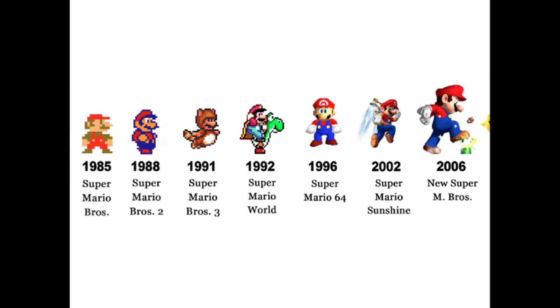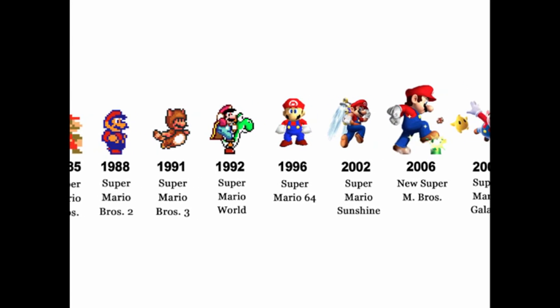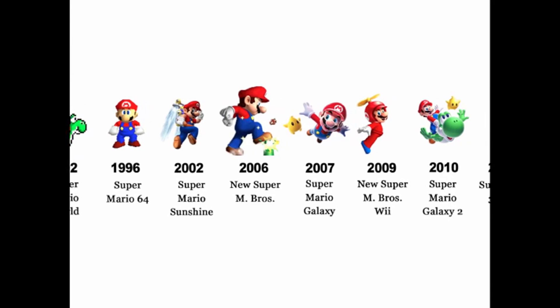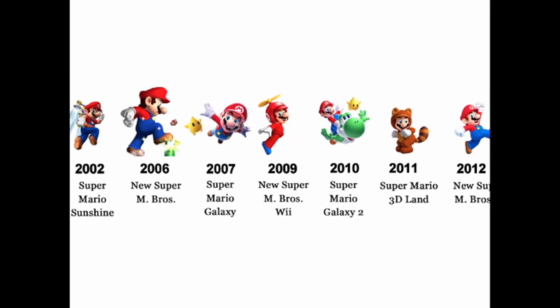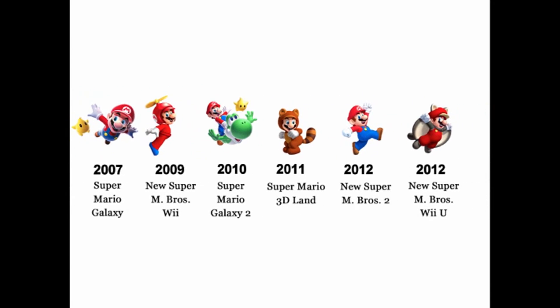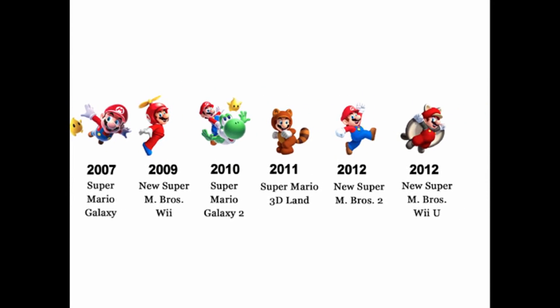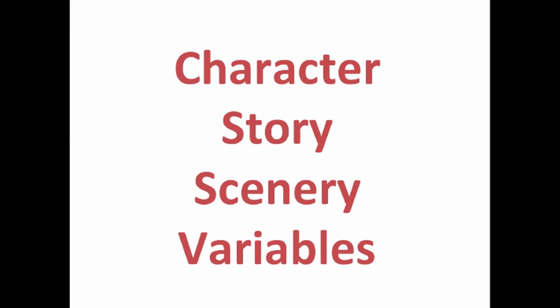Behind every one of these computer games is a team of people working to produce it. These people develop the character, develop the story, develop the scenery, and of course we also need people who are good with physics and mathematics to work with different physics engines within the games, making sure that things happen when we want them to happen.